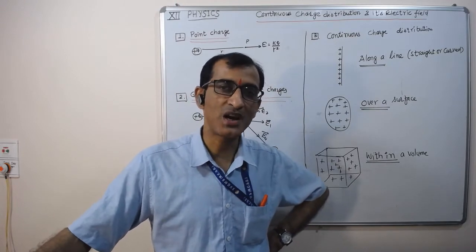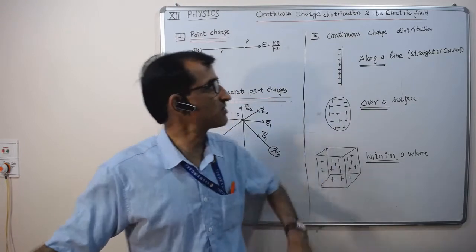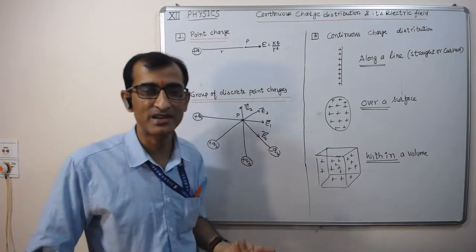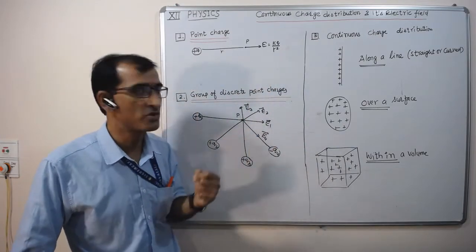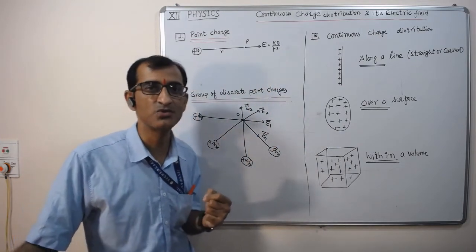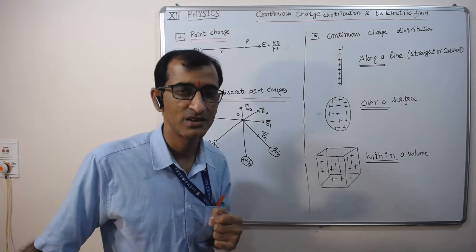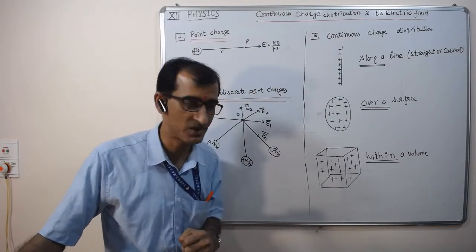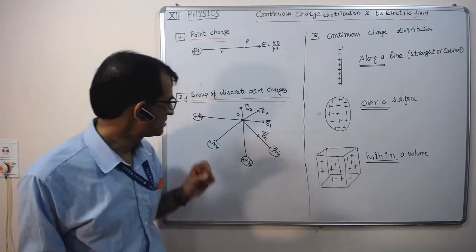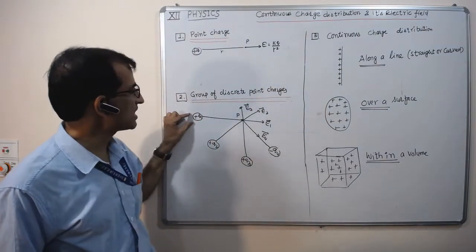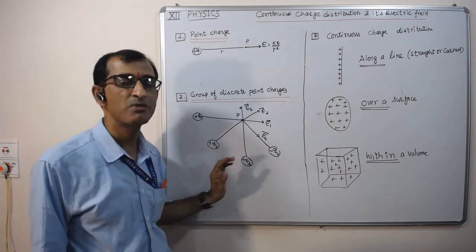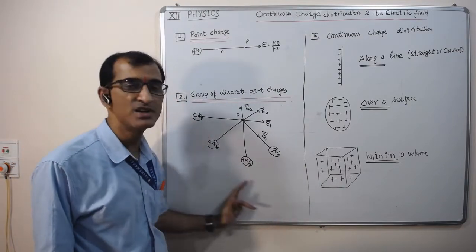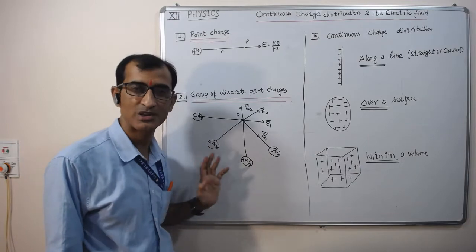For a point charge, we use the equation E equal to kq by R square to find the electric field. And in a group of point charges, we use vector mathematics to find the resultant electric field at the given point in space. These charges are point charges but far apart, known as discrete charges or individual charges.